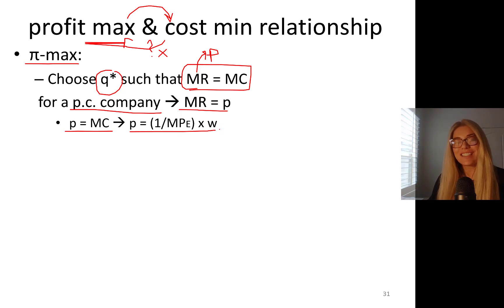What you'll realize here is that this kind of relates to our first order condition. So if you rearrange this, you get value marginal product of labor (price times marginal product of labor) equals the wage rate.